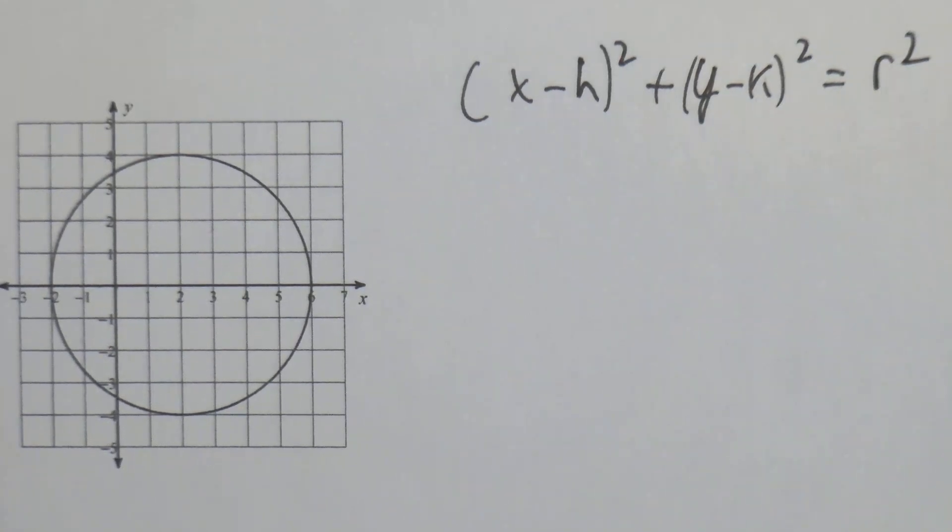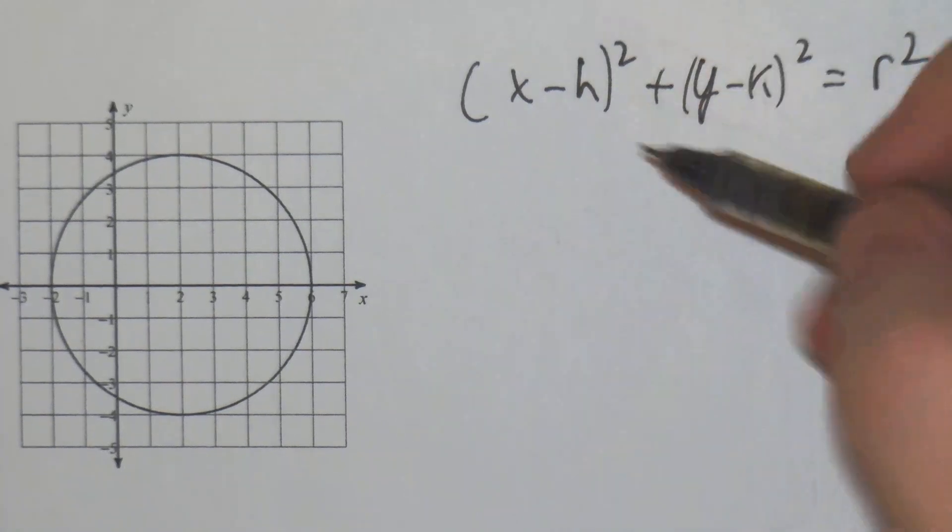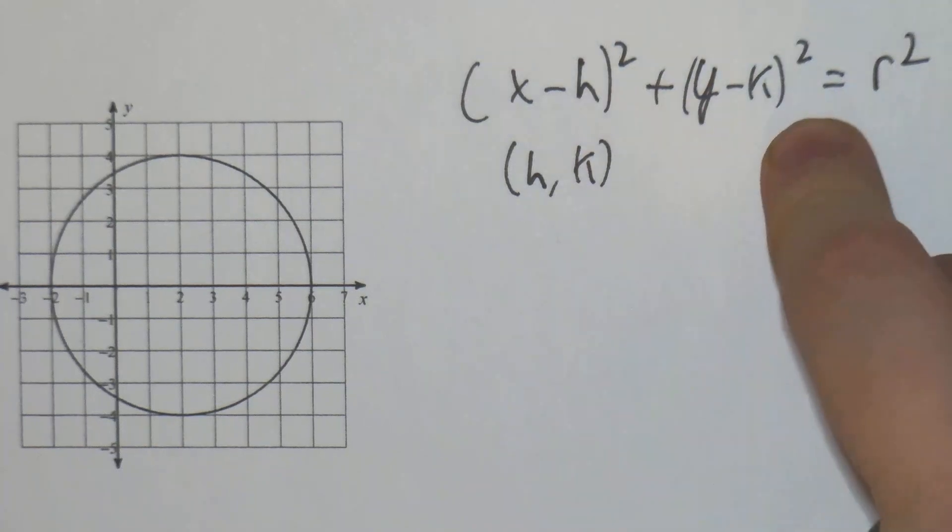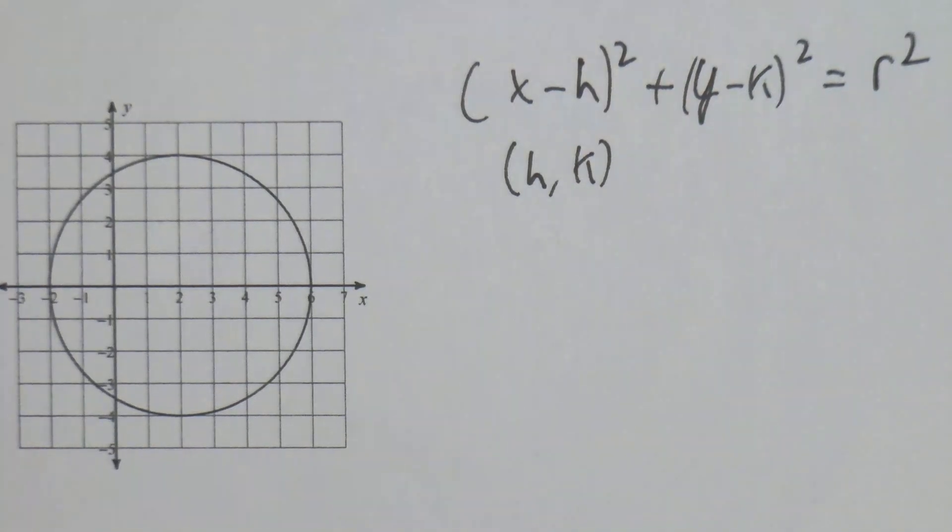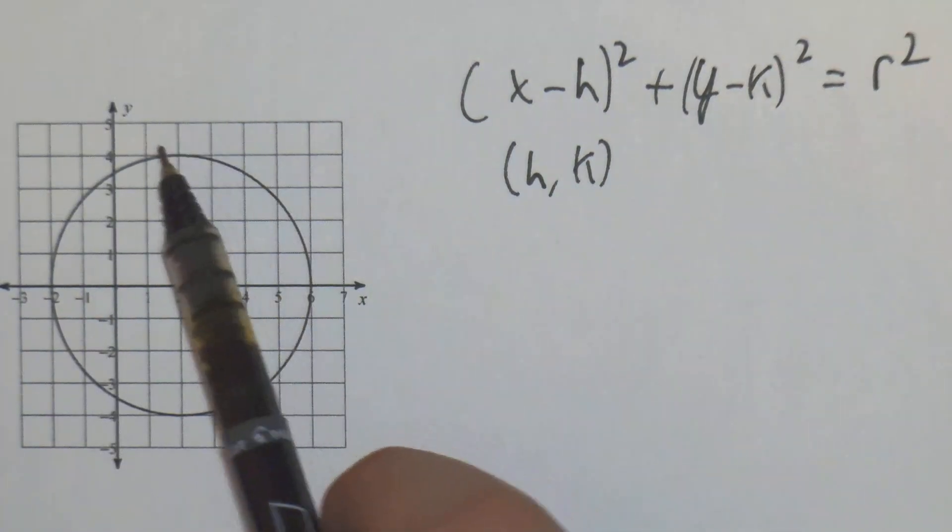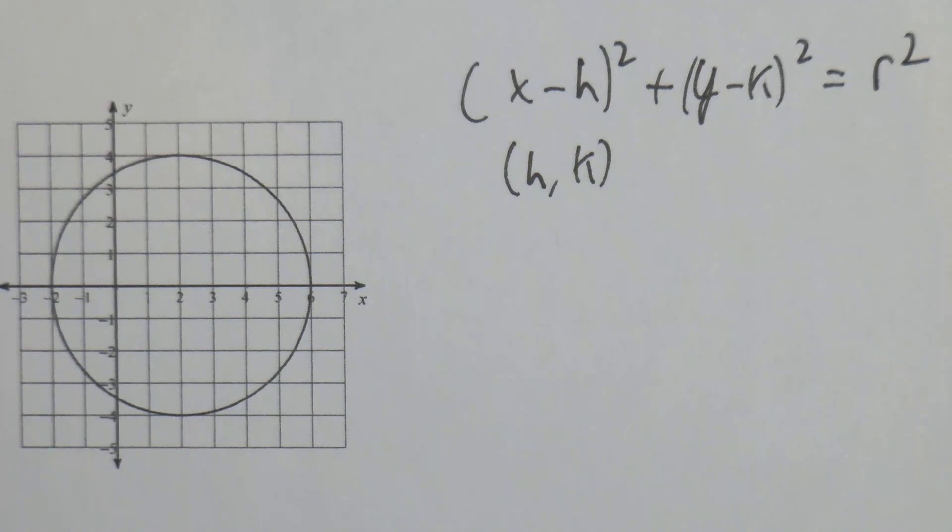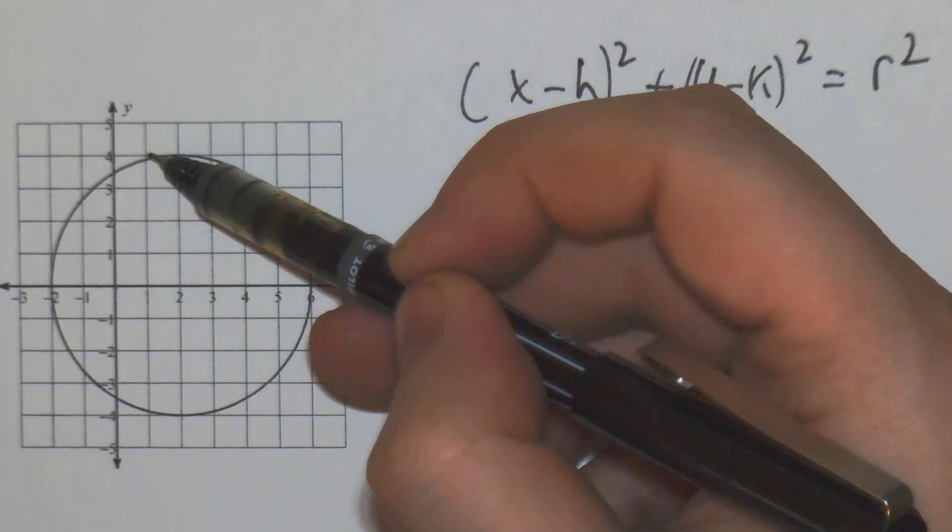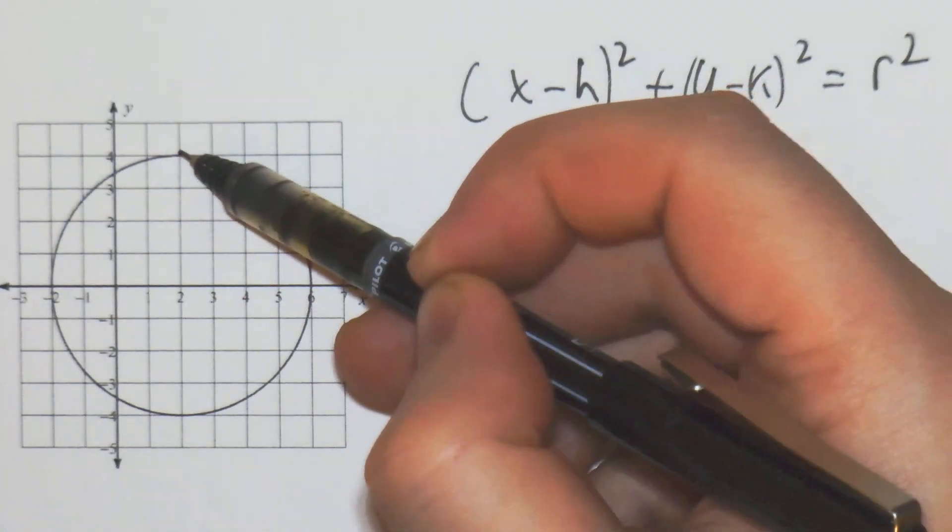All right, so from here we have to first find the center, which is h comma k. The way you would do that is you would see where it's curving around. I typically just count and look for the center part, looks like it's going to be right here.